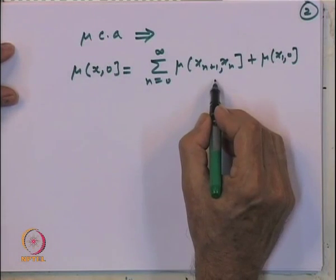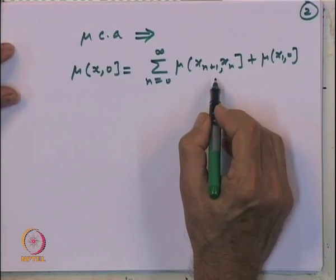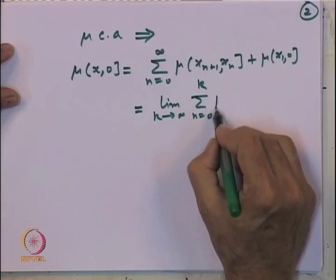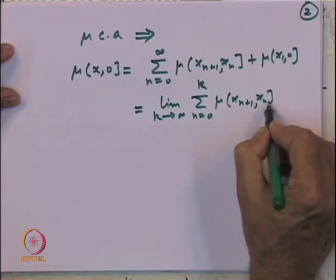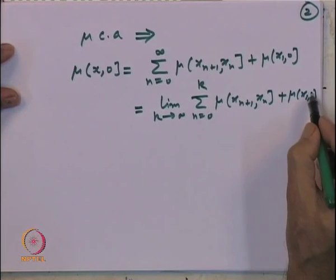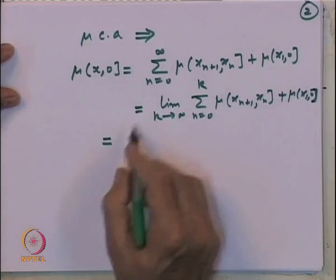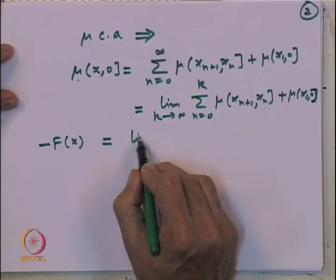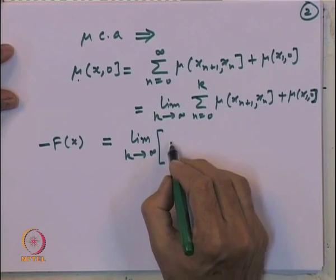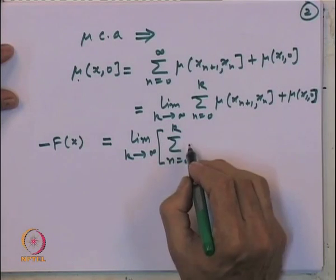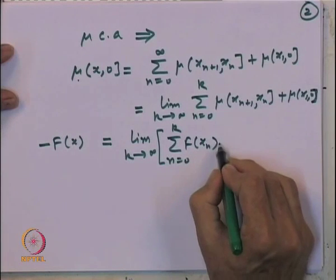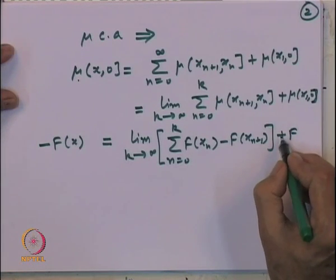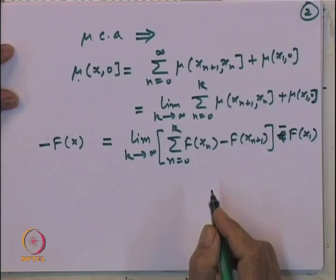By definition, mu of (x, 0] equals minus f(x). So minus f(x) equals the limit as k goes to infinity of the sum from n=1 to k of mu of (x_{n+1}, x_n], plus mu of (x_1, 0]. Expressing in terms of f, we get: minus f(x) equals the limit as k goes to infinity of the sum of [f(x_n) minus f(x_{n+1})] for n from 1 to k, plus [f(0) minus f(x_1)], which simplifies to minus f(x_1).